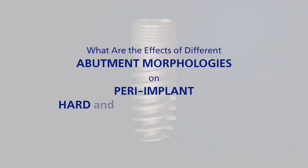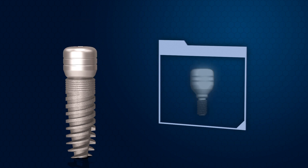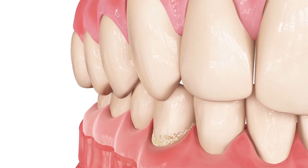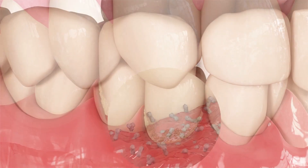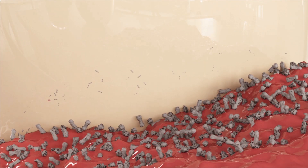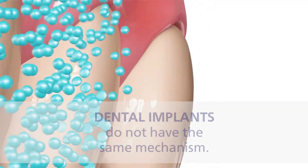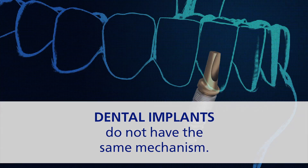What are the effects of different abutment morphologies on peri-implant hard and soft tissue behaviour? The transmucosal abutment of an endosseous implant is the direct connection between the dental implant with the saliva, bacteria and other challenges in the oral cavity. Natural teeth benefit from gingival and periodontal ligament fibres that provide an attachment and point of resistance to bacterial or foreign body invasion. Dental implants do not have the same mechanism.